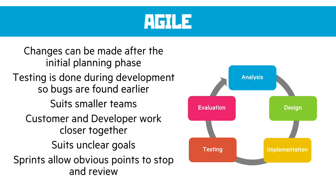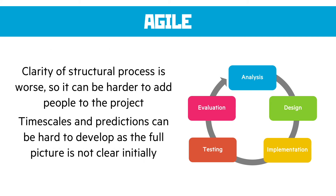The positives of agile are that changes can be made after the initial planning phase, since we keep iterating — changes can be incorporated into the next prototype version. Testing is done during development, so bugs only affect smaller sections of code. It suits smaller teams because there's more communication and smaller amounts of work happening continuously. Customers and developers work more closely together since customer feedback is needed regularly. It also suits situations where goals are unclear or requirements are likely to change. Sprints provide a clear point to stop, reflect, and review before moving back into prototyping.